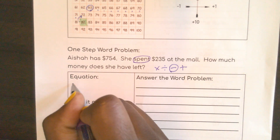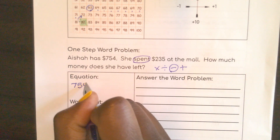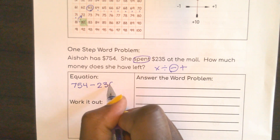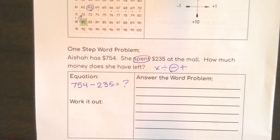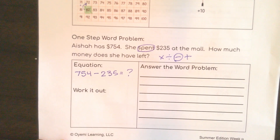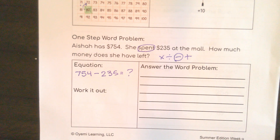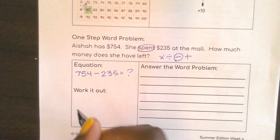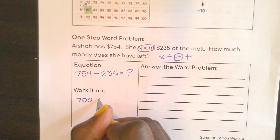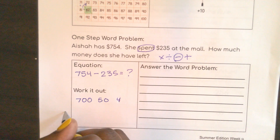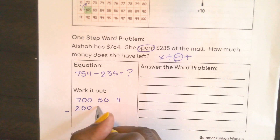So the equation would be 754 minus 235 equals something. Now all week we have seen different ways to work this out. We can use standard algorithm, we can use expanded form, we can use base 10 blocks — there are all sorts of ways. I am going to choose to use expanded form. So I'm going to do 754 and I'm going to subtract 235.